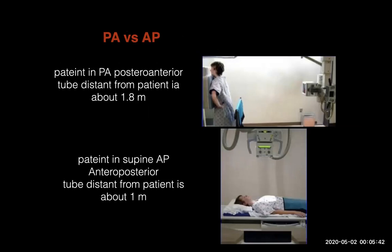The difference between the PA view and the AP view is from the source of the X-ray, which is the tube. In the PA view, which is the standard use, the X-ray beams come from the tube and hit the posterior part of the patient, pass through the patient, and reach the cassette. The distance from the source to the cassette is about 180 centimeters — 1.8 meters.